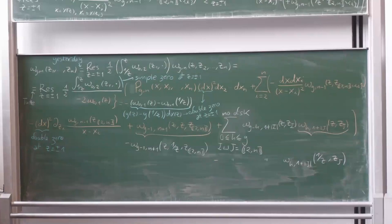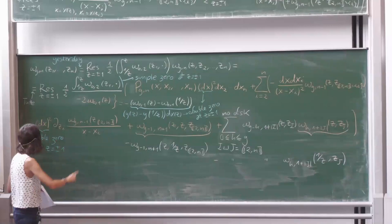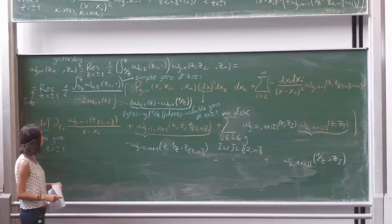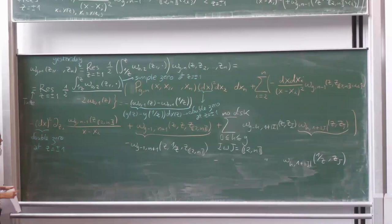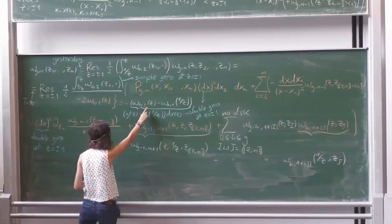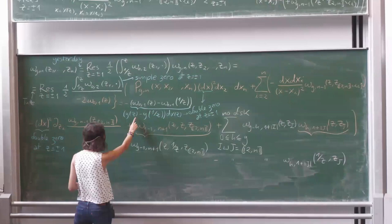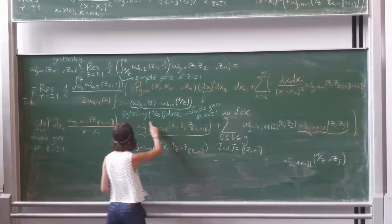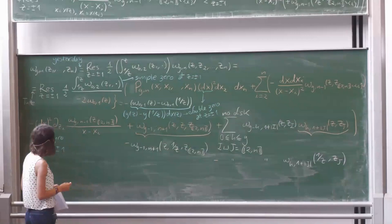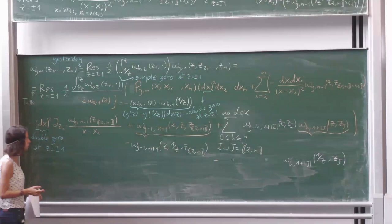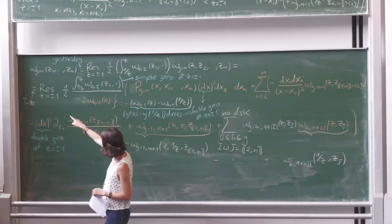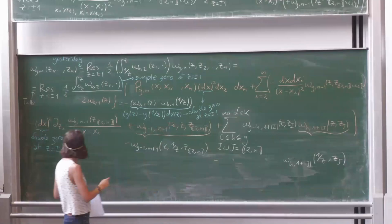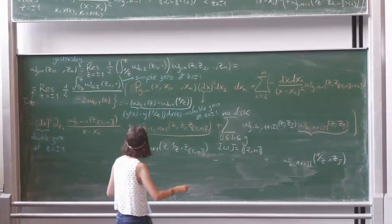Now let's analyze what's happening. This term in the numerator will have a simple zero at the ramification points because these two terms will be the same. This term here transforms using skew symmetry and has a double zero at the ramification points because these terms are the same and this one is zero at those points. Our kernel has a simple pole, and since we are doing the residue at z equal to the ramification points, these terms with double zeros will not survive.